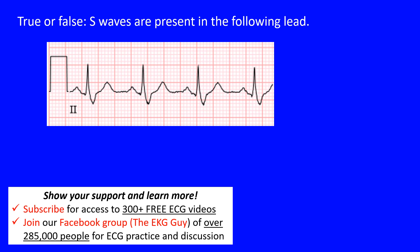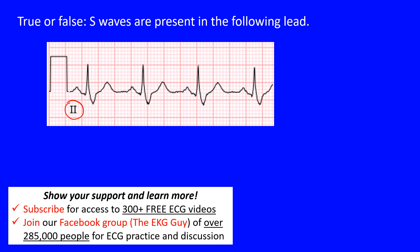Here we have a true or false question: are S waves present in the following lead? We have Lead II here, which is one of our inferior limb leads. Remember there are six limb leads and six precordial leads. Lead II is one of the three inferior leads — the other two are leads aVF and Lead III.